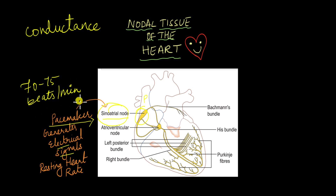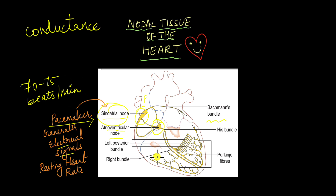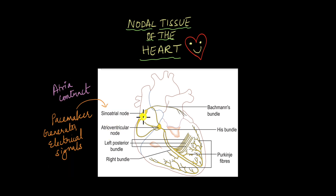From the sinoatrial node, electrical impulses are transmitted to the left atrium through Bachmann's bundle, and then to the atrioventricular node. The atrioventricular node is located right between the right atrium and the right ventricle. It is capable of generating its own electrical signals, but not enough to set the 70 to 75 beats per minute resting rate — it generates much less than that. When electrical impulses are transmitted from the sinoatrial node to the atrioventricular node, that is what causes the atria to contract.